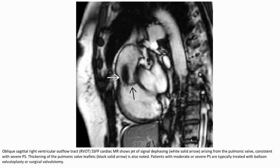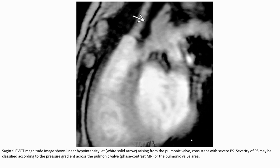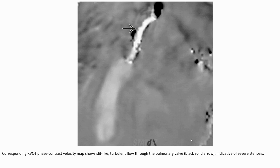Thickening of the pulmonary valve is noted. In moderate to severe pulmonary stenosis, the pulmonary valve is treated with balloon valvuloplasty or surgical valvotomy. MRI images show linear hyperintensity arising from the pulmonary valve consistent with severe pulmonary stenosis. Severity may be characterized by the pressure gradient across the pulmonary valve or pulmonary valve area. A slit-like flow through the pulmonary valve is indicative of severe pulmonary stenosis.